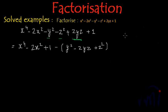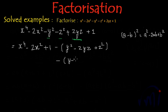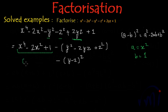Now, what is this? This bracket is in the form of a minus b whole square, where a minus b whole square equals a squared minus 2ab plus b squared. So this bracket can be written as y minus z whole squared. And if we look at the first three terms, they are also in the format of a minus b whole square, where a is x squared and b is equal to 1. So this can be written as x squared minus 1 whole squared.